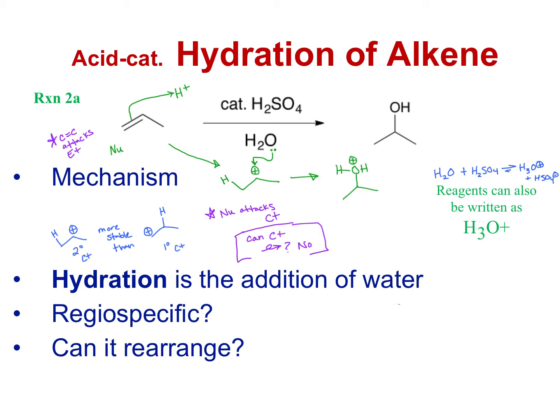We have one more step — we have a positive charge on our oxygen. It's just going to be an acid-base reaction. We need the strongest base in solution to come get that extra hydrogen. HSO4⁻ is not a strong enough base to pick that proton back up, so we use water as the base to come get that hydrogen, and then we get the product.